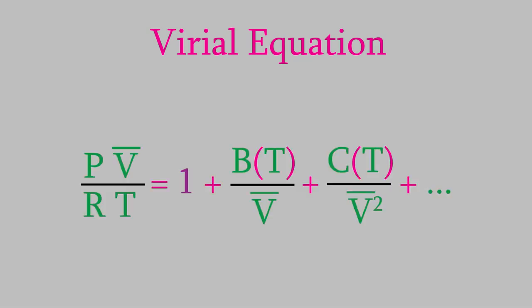It's called the virial equation, and it looks like this. Notice that on the left, we have PV bar over RT, which is the compressibility factor we looked at earlier. On the right side, we have an infinite series of terms. The first term is just one, and each of the other terms has V bar in the denominator, raised to an exponent that increases by one with every term.